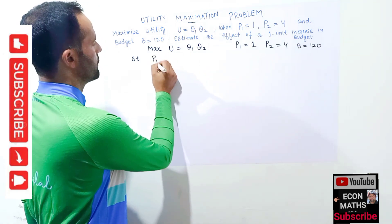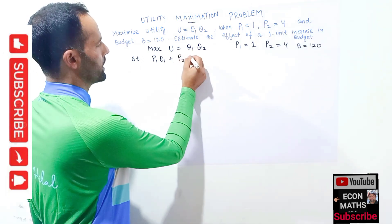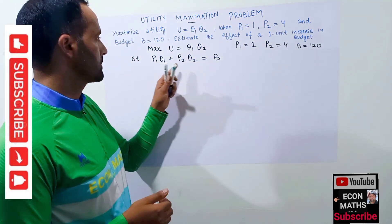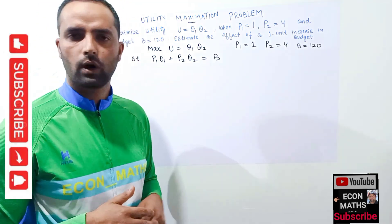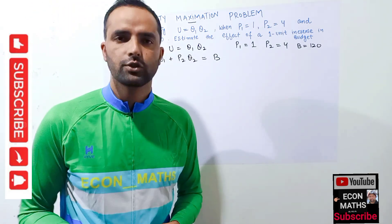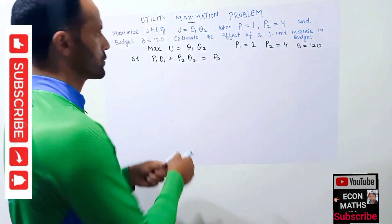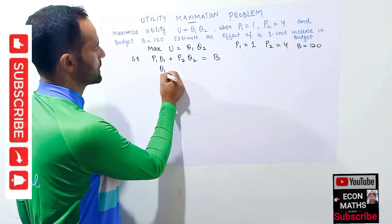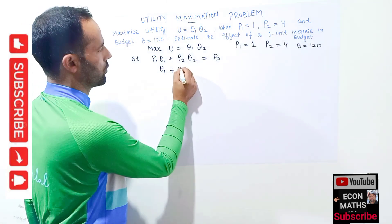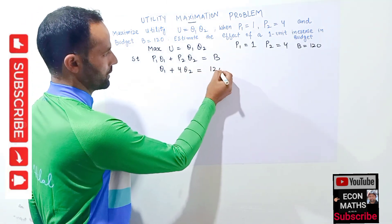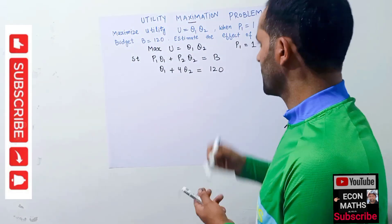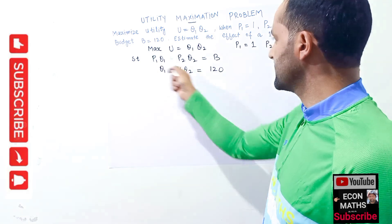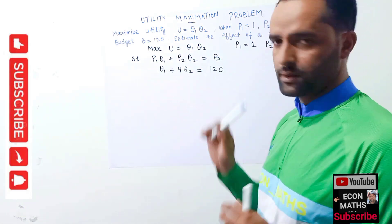Our budget constraint is simply p1 times q1 plus p2 times q2 equal to our budget — price of good one times units of good one plus price of good two times units of good two equals our budget, meaning all the budget should be exhausted. Plugging in values: p1 is one, so we get q1 plus 4q2 equals 120. This is our utility function and this is our budget constraint.